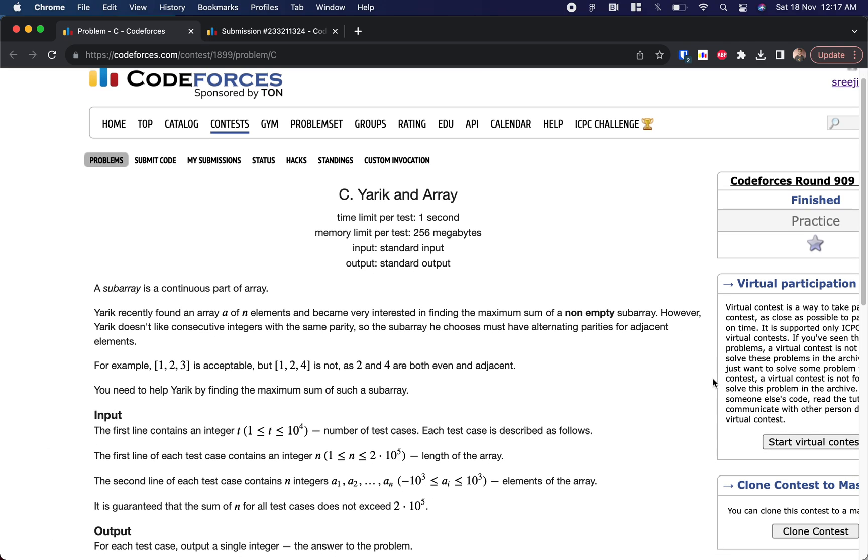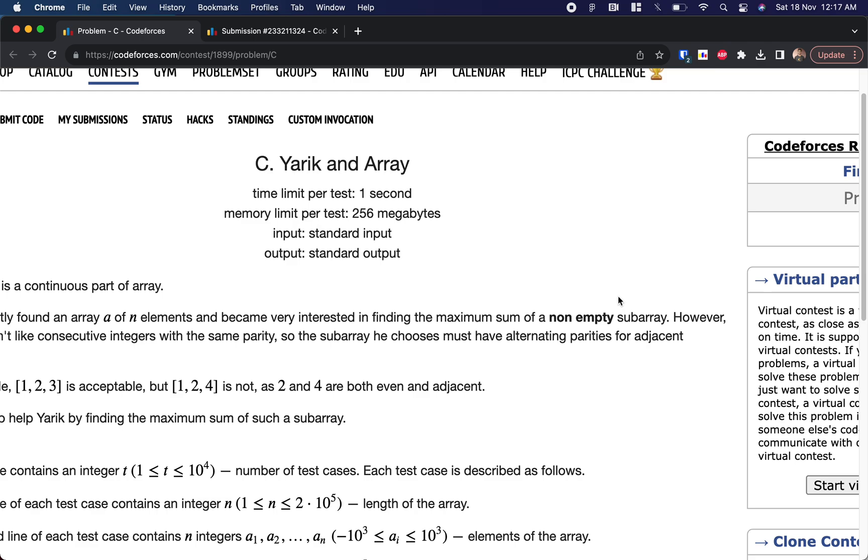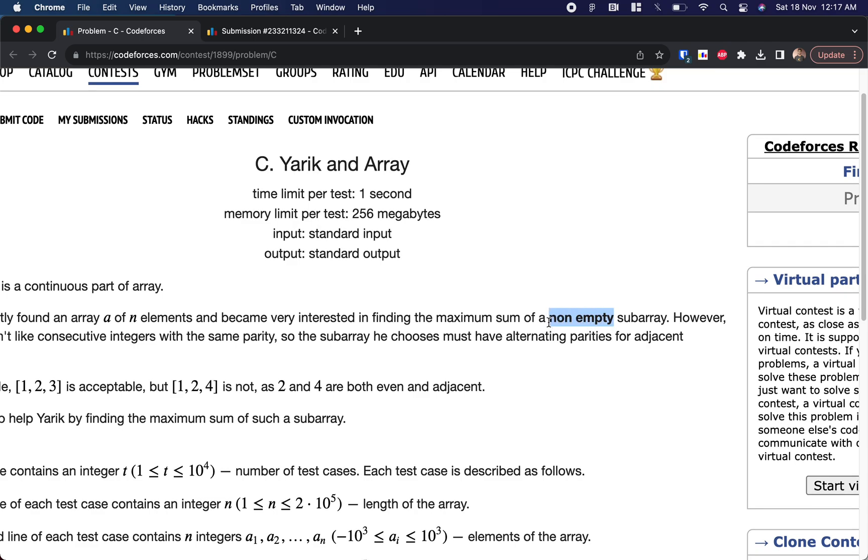The problem is pretty straightforward. We have to find the maximum sum of a non-empty subarray. Subarray means a continuous set of elements inside an array. Why did they say specifically non-empty? I guess if we have an array full of negative numbers, we can't just say zero. We can't say it's an empty set and zero. You have to find the maximum sum of the non-empty subarray.